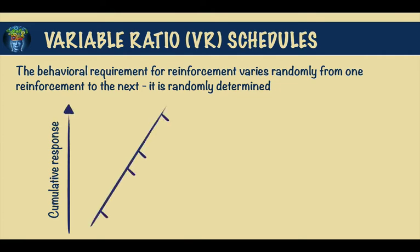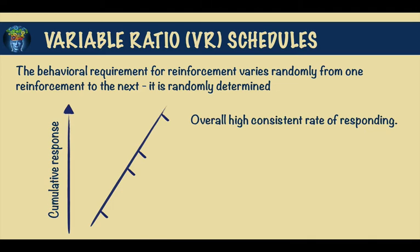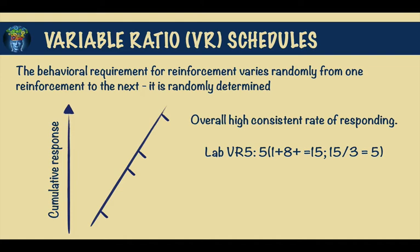Illustrated on the cumulative recorder, you can see that the characteristic pause after reinforcement that occurs in a fixed ratio schedule is eliminated in the variable schedule. This produces an overall high, consistent rate of responding. In a lab situation, a rat may be reinforced with food on a VR5 schedule — so on average, every 5th time that the behavior is performed.